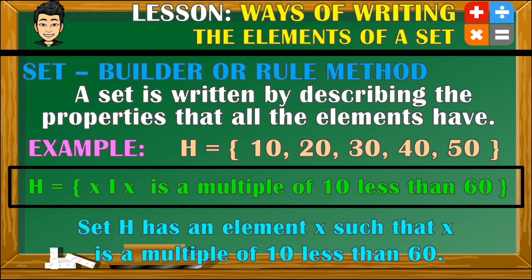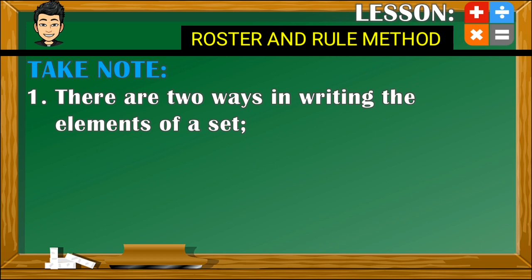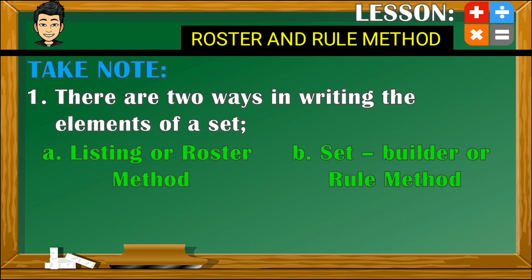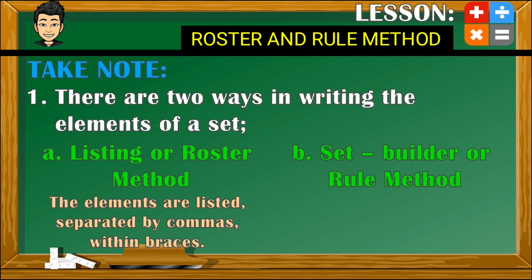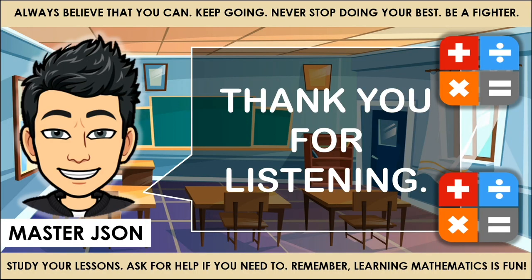So those are the two ways of writing down the elements of a given set. Before we end our video, take note of the following: there are two ways in writing the elements of a set — the listing or roster method, and the set builder or rule method. In the first one, the elements are listed separated by commas within braces. In the second one, the elements are described based on their properties or characteristics. So there you have it, class. I hope you learned something from our video — thank you for listening. See you again next time, masters!